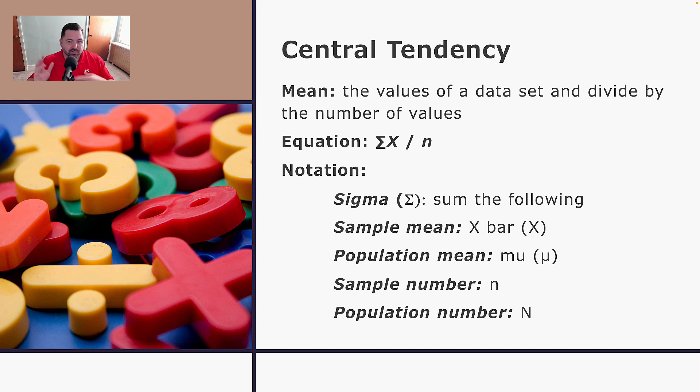So to make sure that we understand the formulas that we may be looking at this term, anything that is a population parameter will be represented in Greek notation or capital letters. Anything that is a sample statistic will be represented in alphanumeric characters in lowercase.